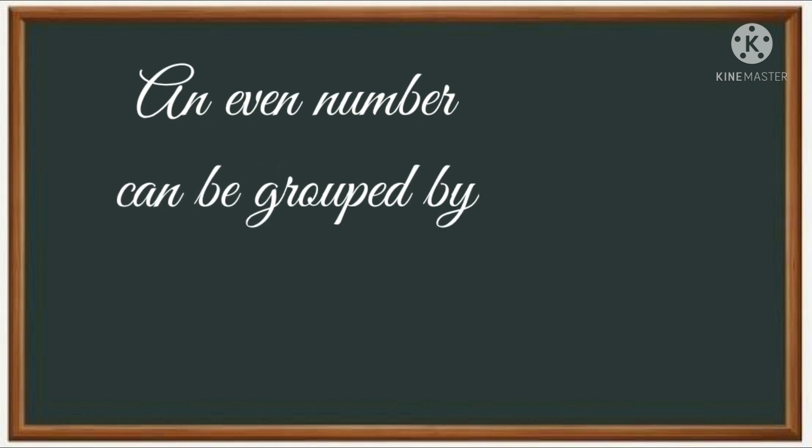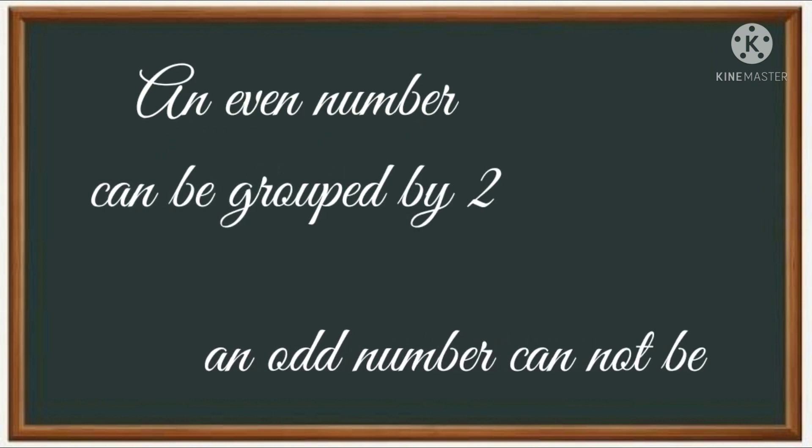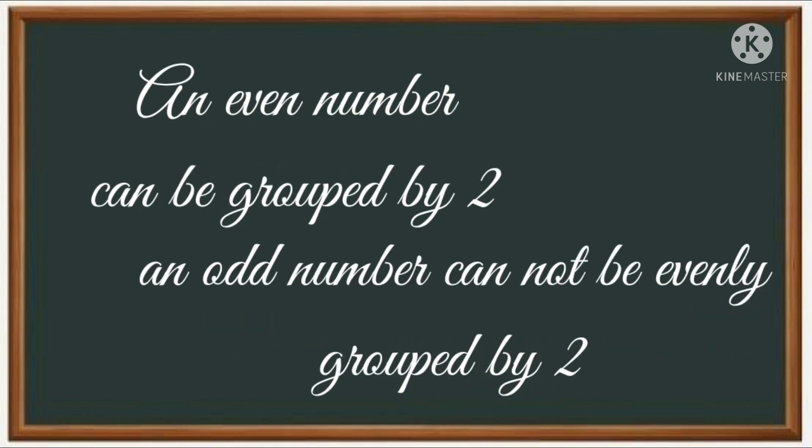An even number can be grouped by two. An odd number cannot be grouped by two. It is all about the number two. It is very confusing, right? Let me show you an example and you will be understanding it.